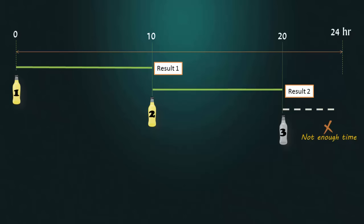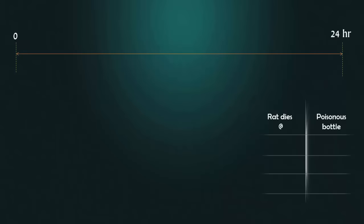The solution is very simple. You just need to twist your brain a little bit. Feed the rat sample from the first bottle and start the timer.